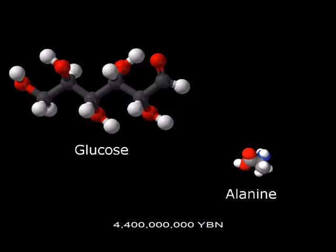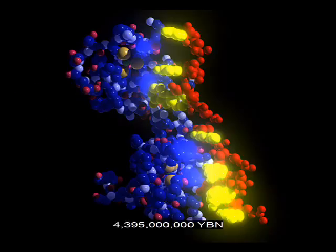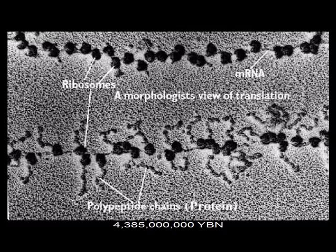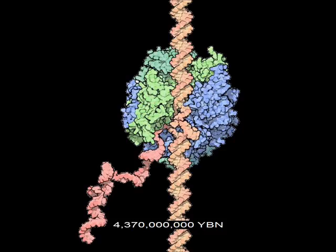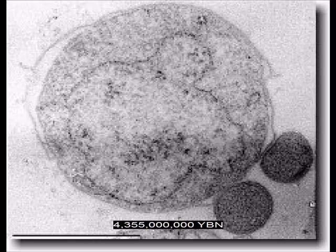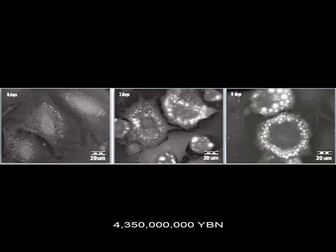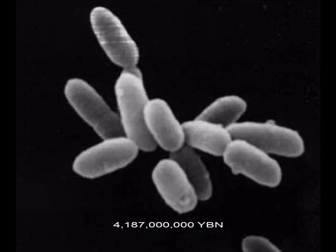Larger molecules form on Earth like amino acids and sugars. Nucleic acids form on Earth. RNA links amino acids into the first proteins. A protein copies nucleic acid molecules. The first cell on Earth. DNA is surrounded by proteins. Cells make lipids. The first virus.